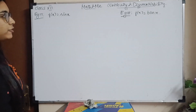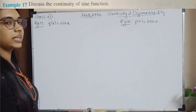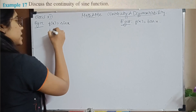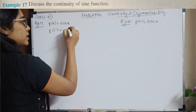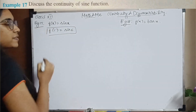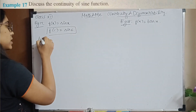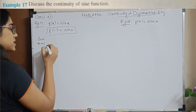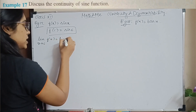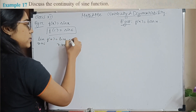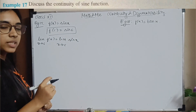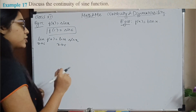Example 17: F(X) = sin X. To prove it is continuous, the first step is to find f(C) = sin C. Then the limit as X tends to C of f(X) is equal to the limit as X tends to C of sin X. Whenever we are dealing with trigonometric functions, we need to be careful.